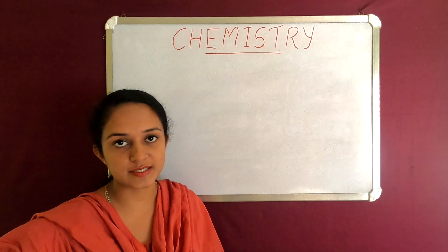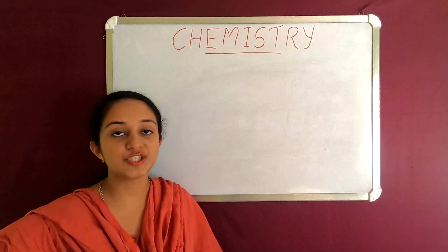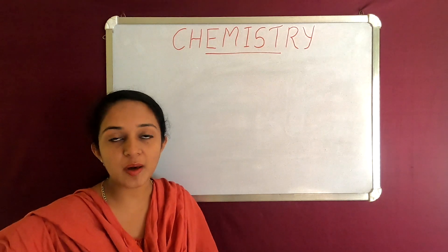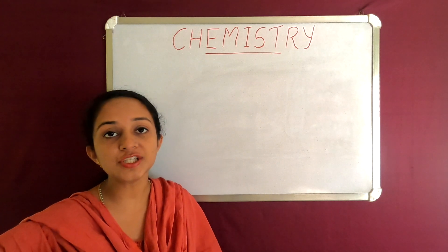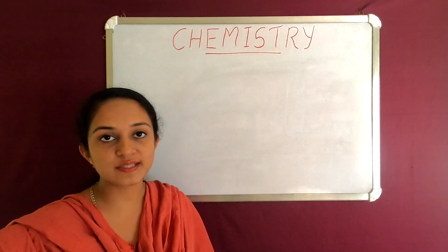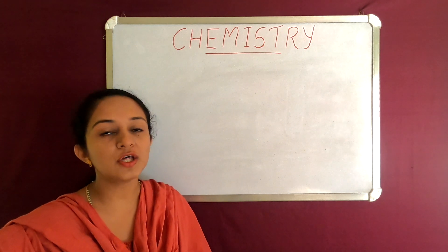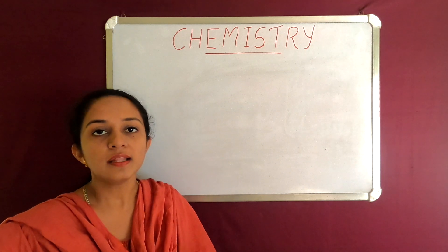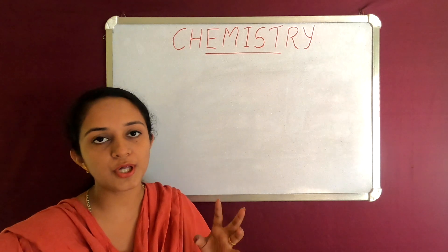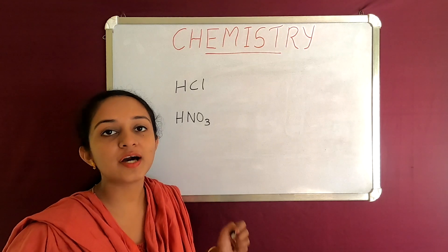These are the characteristics of acids. First, acid turns blue litmus paper red. Second characteristic: acid reacts with metals to form hydrogen gas. Third characteristic: acid reacts with carbonates to form carbon dioxide. And one more characteristic: acids have a sour taste. We use lime water or vinegar — these have a sour taste. These are the common characteristics of acids.